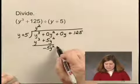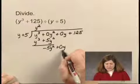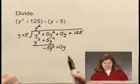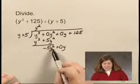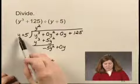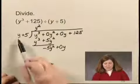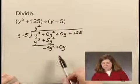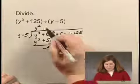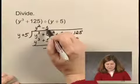I bring down my next term, which is a zero y, and then I divide negative 5y squared by y. Or I can think what times y is negative 5y squared. And that will be minus or negative 5y.